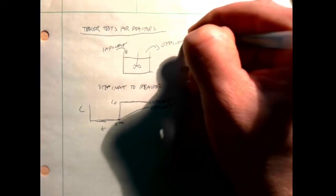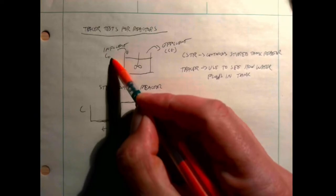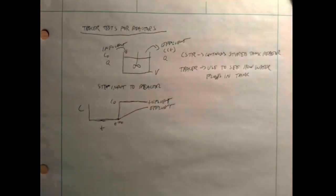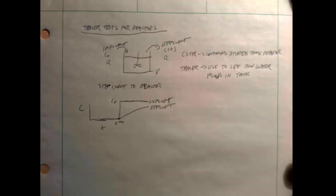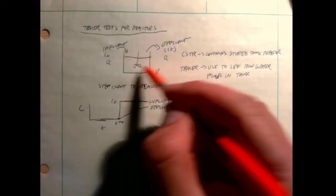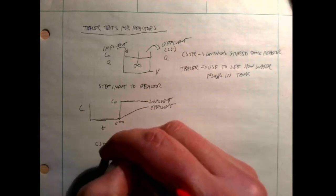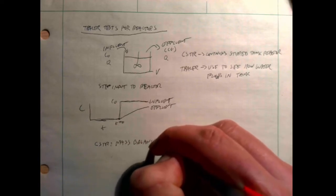In the effluent, we measure concentration versus time. The inflow has concentration C₀, with flow rate Q in and out, and the reactor has volume V. Based on how the effluent looks compared with the influent, we can make some analysis of what's going on. So let's look at analyzing this problem for the CSTR case.